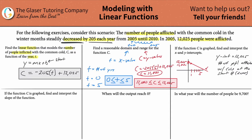The x-intercept happens when the y value is zero. So I plug in zero for C: 0 equals negative 205 times t plus 12,025. I now have one equation with one unknown, which we can solve. I'll subtract 12,025 from both sides and then divide by negative 205. So 12,025 divided by 205 works out to be approximately 58.7. So T is equal to 58.7, meaning in 58.7 years the number of people afflicted with a cold will be zero — probably not possible, but that's what it means.